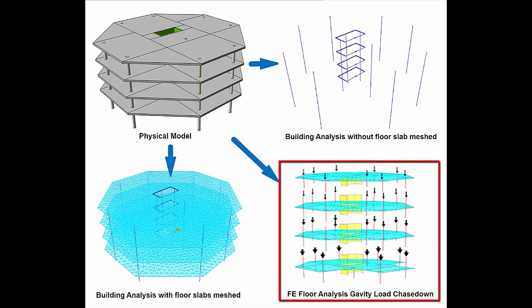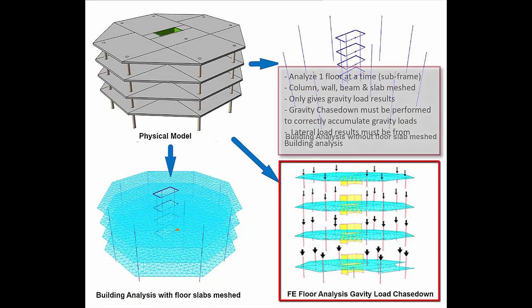The final method is FE floor analysis. This unique analysis considers only one story at a time. In this subframe analysis, only members and slabs of that particular story is considered and analyzed. As such, in order to accumulate the gravity loads of columns and walls, analysis must start from the top to bottom story separately and in sequence, in a process called gravity load chase down.